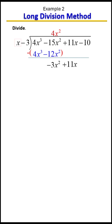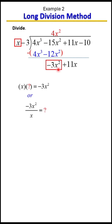We're going to repeat the process: outside far left, under the division symbol far left. Ask yourself what you need to multiply x with to get negative 3x squared. You can also look at it as negative 3x squared divided by x. Either way, it equals negative 3x.